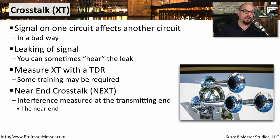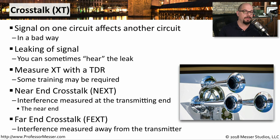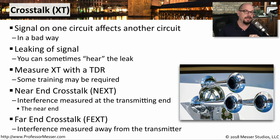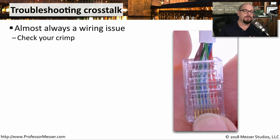You can also understand how much crosstalk you're seeing on the other side by measuring at the destination — that's far-end crosstalk, or FEXT. This means you could look at near-end crosstalk to see how much is introduced when the signal is at its strongest, and then look at far-end crosstalk to see how much was introduced as the signal went through the cable. There's always going to be a little bit of crosstalk on a copper connection, but if you have excessive crosstalk values, you may want to look more closely at the cable.